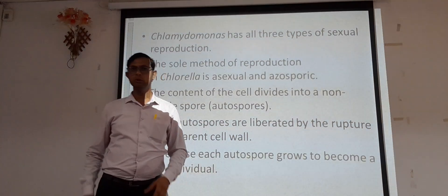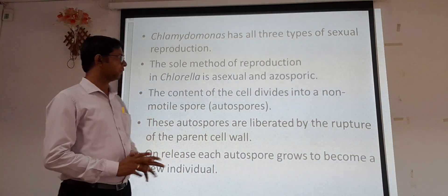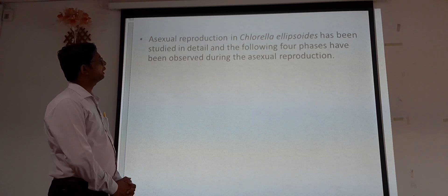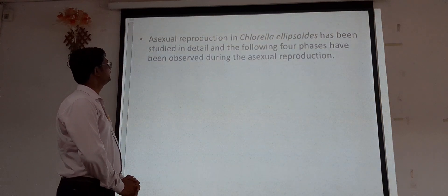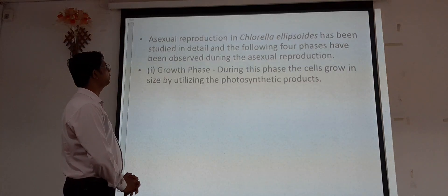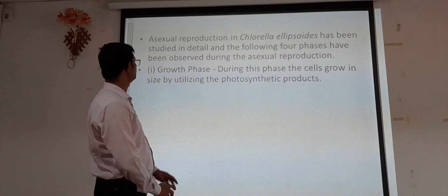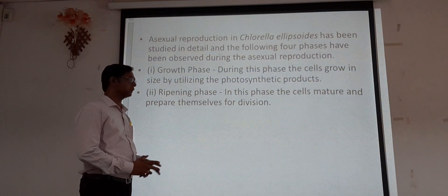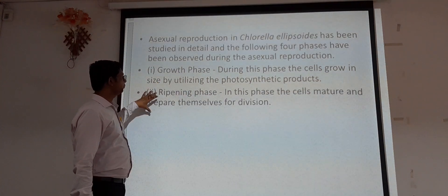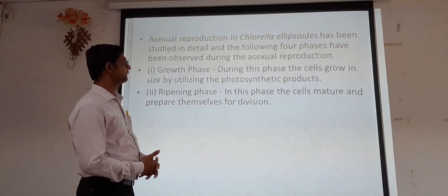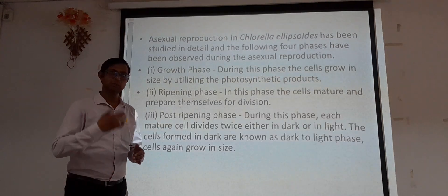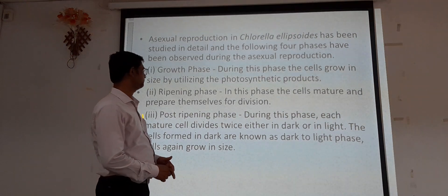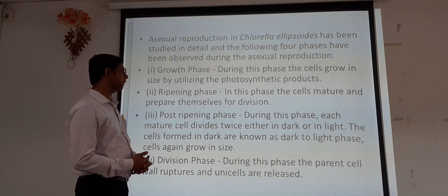The release of autospores produces new plant bodies in the new season. Asexual reproduction in Chlorella ellipsoidea has been studied in detail, and four phases have been observed. The first phase is the growth phase, where the cell grows in size by utilizing photosynthetic products. The second phase is the ripening phase, where the cell matures and prepares for division. The third is the post-ripening phase, where each mature cell divides twice, either in dark or light.